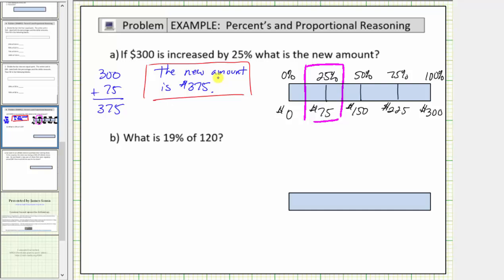Now for part b, we're asked what is 19% of 120? It's difficult to determine 19% of 120 using the bar. So what we'll do is find 20% of 120 using the bar and then subtract 1% of 120 from that amount.